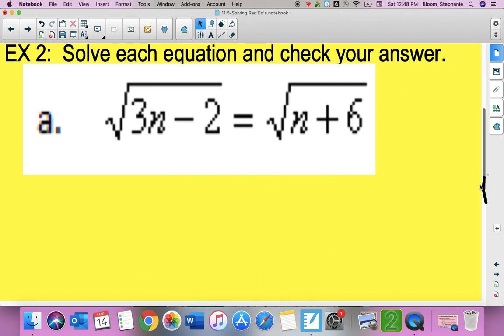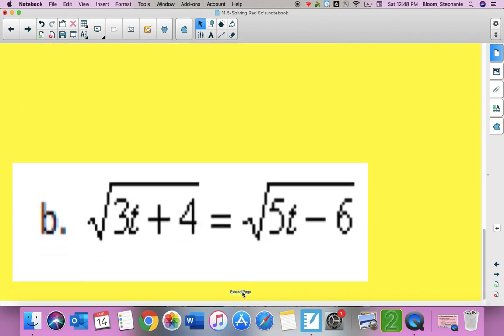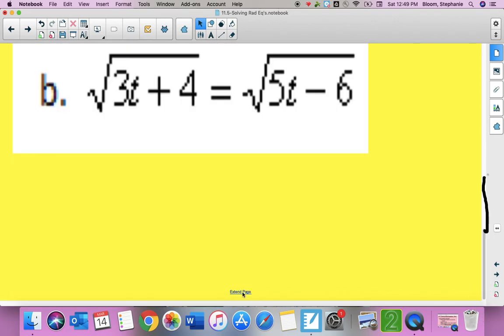Next one looks like this. And again, I have rads on both sides of my equations, nothing outside. So I'm going to draw in my wall. And I'm going to get rid of those rads by squaring both sides. So I can just bring down 3t plus 4. And I can just bring down 5t minus 6. And then I'm going to solve.